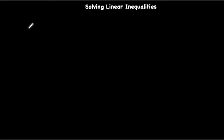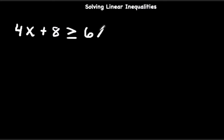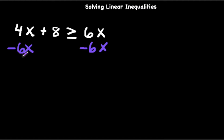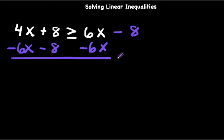So let's say that you're given something like 4x plus 8 is greater than or equal to 6x. Get all variables to one side and all numbers to the other side. We have 6x on the right side and 4x on the left side, so let's move 6x over to the left side by subtracting 6x. We're going to get the 8 to the right side of the inequality by subtracting 8.